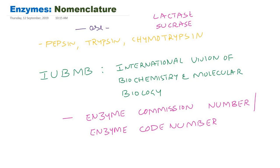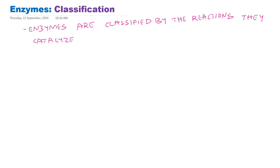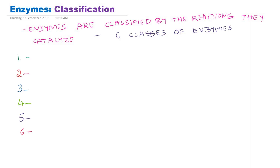First we will see the classification of enzymes. Enzymes are classified by the reaction they catalyze — that means the International Union of Biochemistry and Molecular Biology classified enzymes according to the type of reaction they catalyze. There are totally six classes of enzymes. In this video I will just give the classification; I will make a separate video for each class with examples and subclasses.